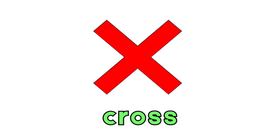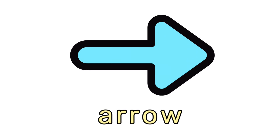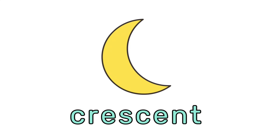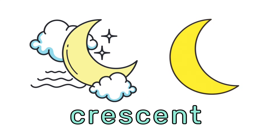What shape is this? Right, it's a cross. Two lines crossing each other. What shape is this? Yes, it's an arrow. It shows direction. What shape is this? Correct, it's a crescent. It looks like a half moon.